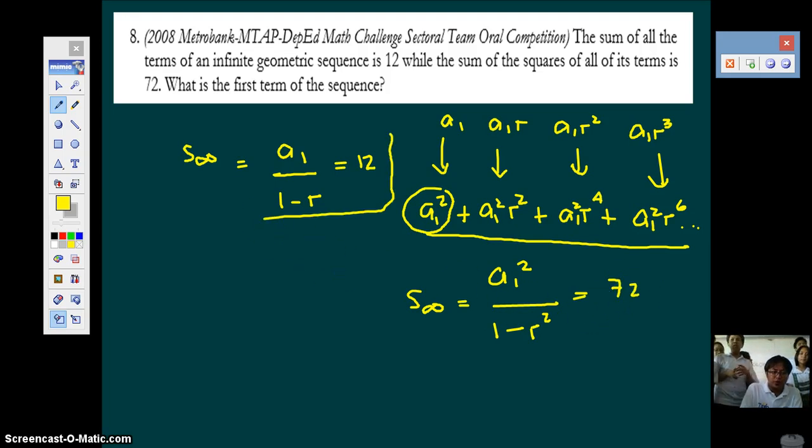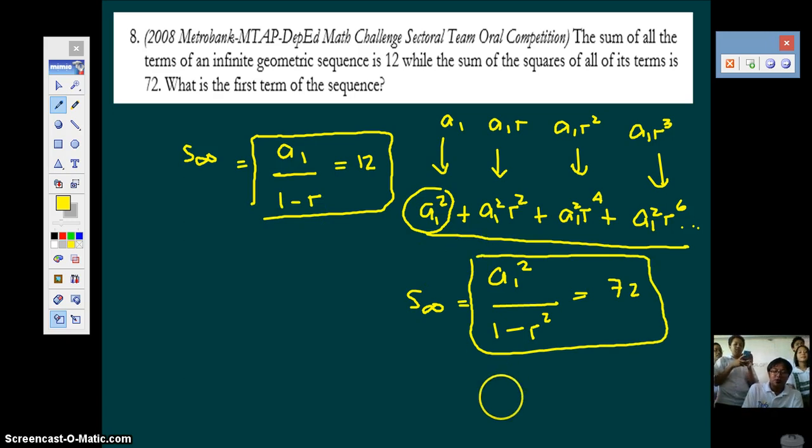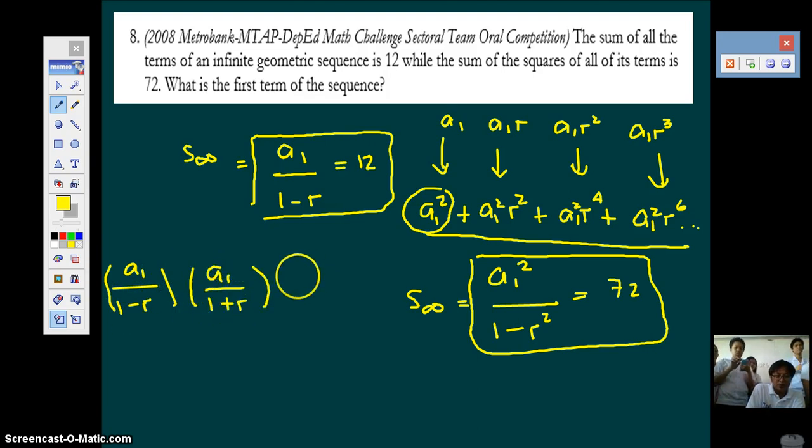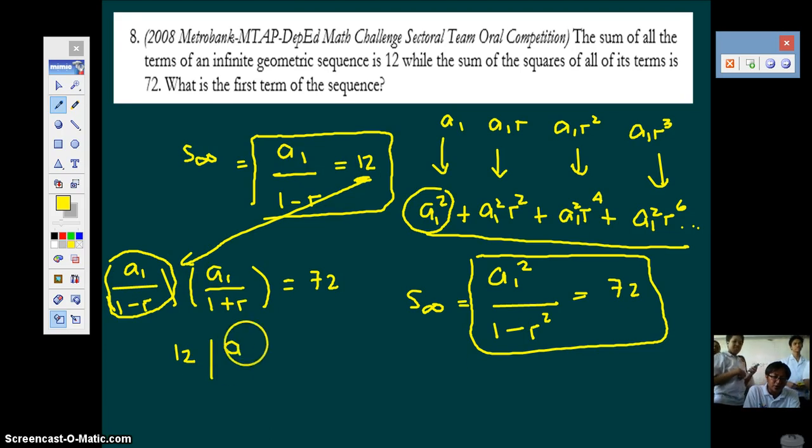So you will work with these two equations, this one and this one, in solving. Now, a1 squared can be written as a1 over 1 minus r times a1 over 1 plus r, equal to 72. Now what happened here? Simple factoring. A1 squared is a1 times a1 denominator. 1 minus r squared is 1 minus r and 1 plus r. But you know this, you know the value of this, it's 12. So put 12 there. So that becomes 12 quantity a1 over 1 plus r, equal to 72.